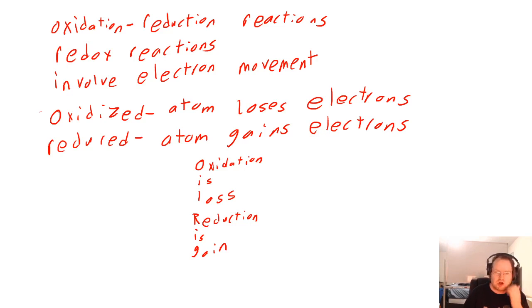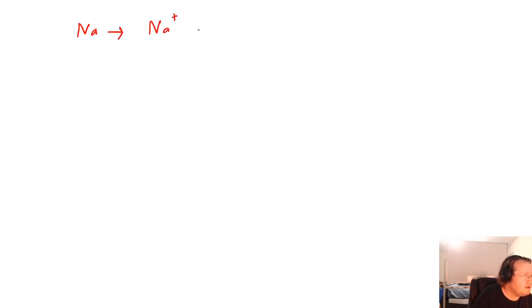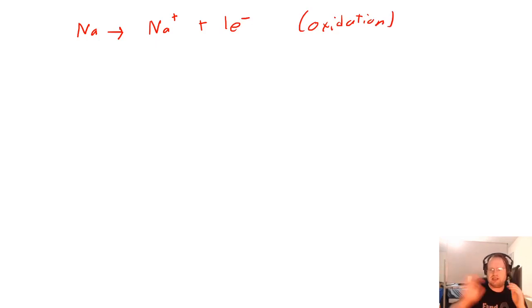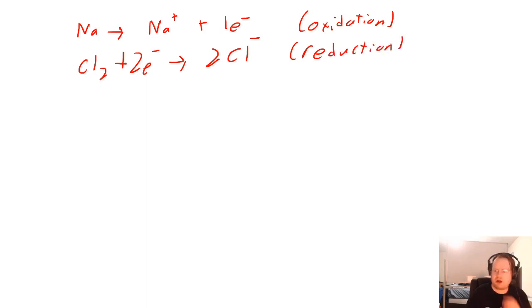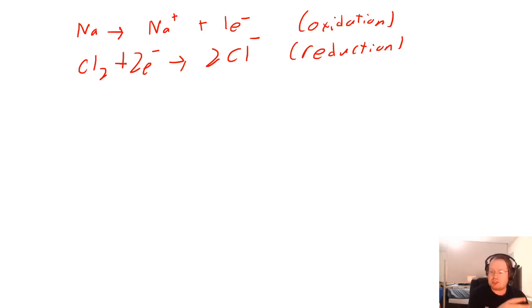Let's start by looking at single atoms. For example, the sodium atom — if it becomes sodium +1, this reaction is an oxidation reaction because sodium is losing one of its electrons. On the other hand, let's look at a reduction. Take the molecule Cl2: react it with two electrons and it forms two Cl⁻ ions. This is reduction because chlorine started off neutral in Cl2 — remember, chlorine is one of our diatomic elements — but if you add two electrons, you make two chlorine minus ions. So since chlorine changed from neutral to a negative ion, we say that it was reduced.